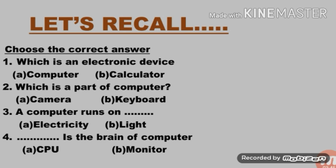So what are the things we learnt? Let us recall. Which is an electronic device — a computer or a calculator? Yes, a computer. Which is a part of a computer — a camera or a keyboard? A keyboard. Does a computer run on electricity or light? Yes, electricity. Then, which is the brain of a computer — a CPU or a monitor? Yes, a CPU is the brain of the computer.